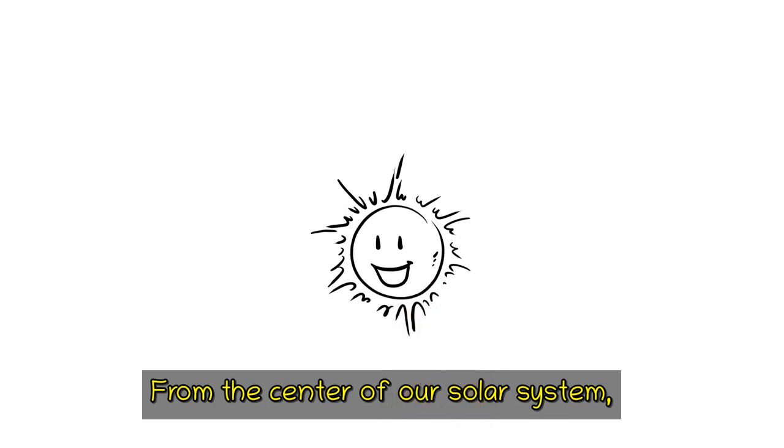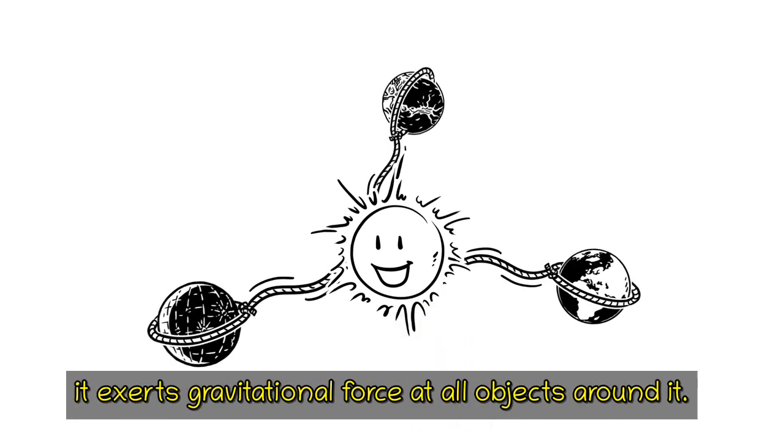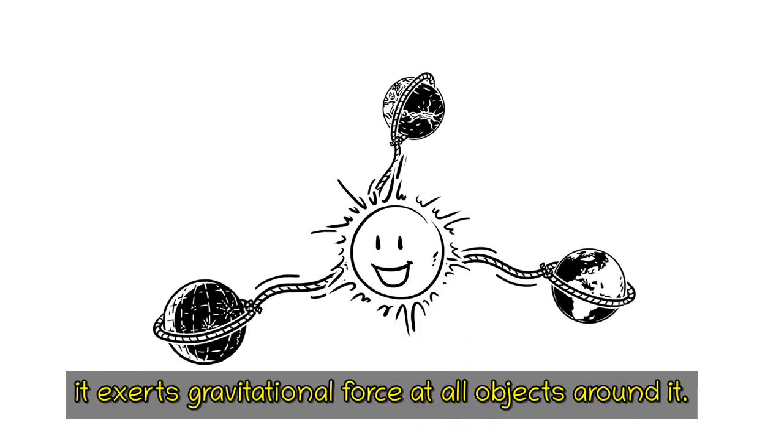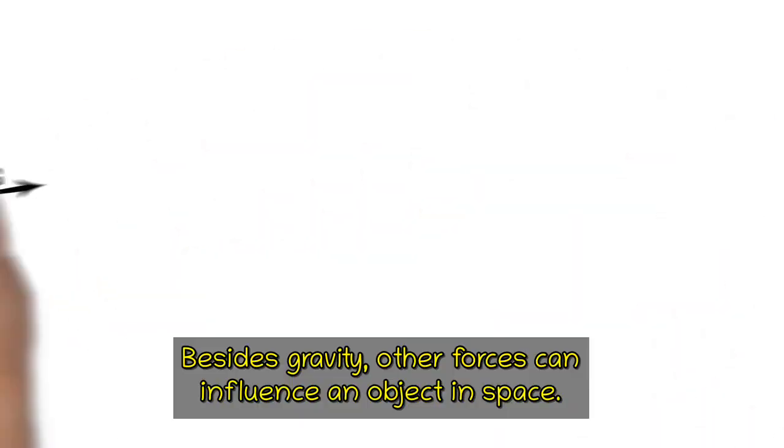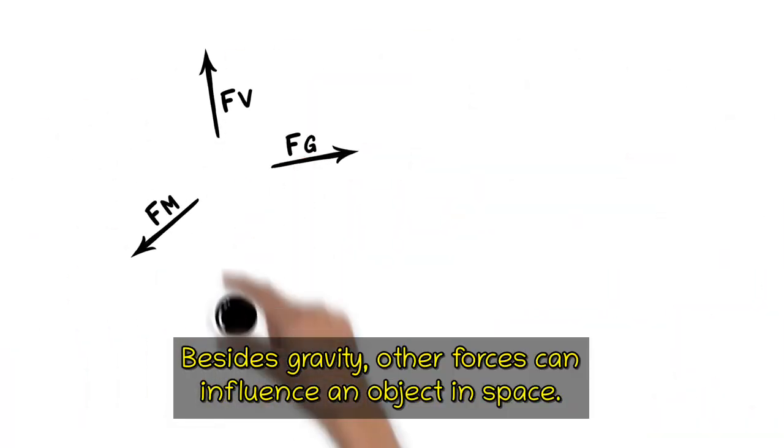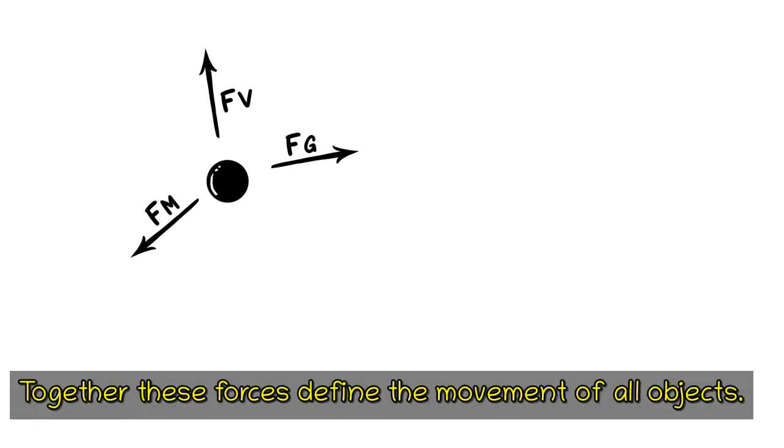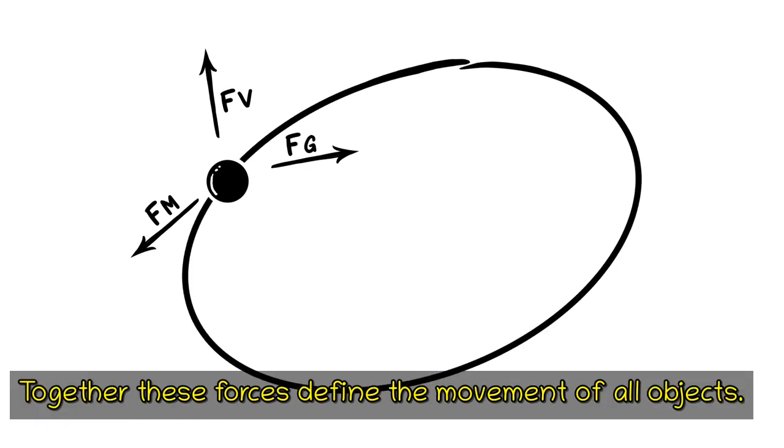From the center of our solar system, it exerts gravitational force at all objects around it. Besides gravity, other forces can influence an object in space. Together, these forces define the movement of all objects.